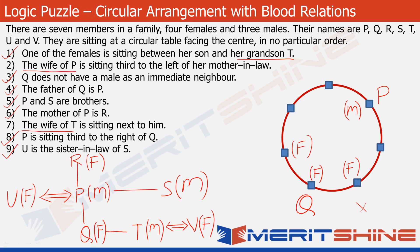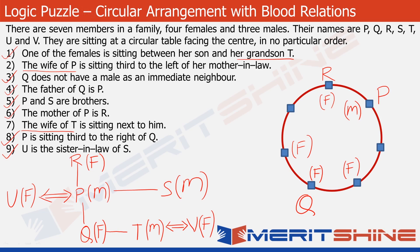The position cannot be these already-excluded spots, and P's position is already occupied, so there is just one position where this female can go. Let's put F there. We already know who this female is — she has to be the grandmother, R. Statement one tells us R has her son on one side and grandson T on the other, so let's put T as the other neighbour of R. So R is surrounded by her son P and her grandson T.